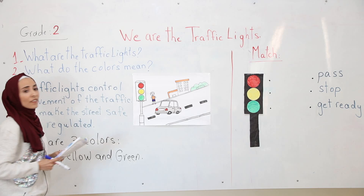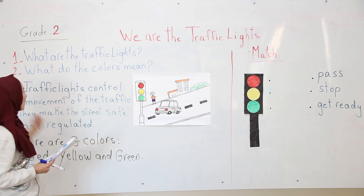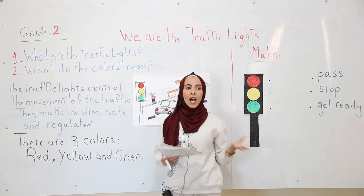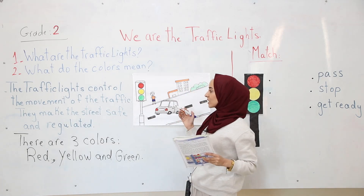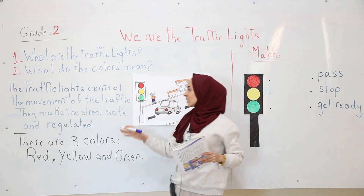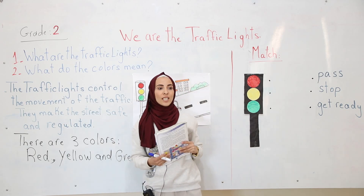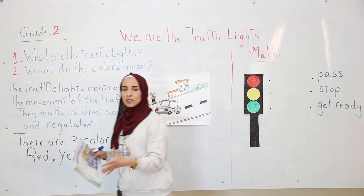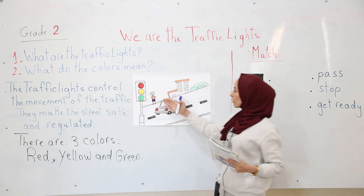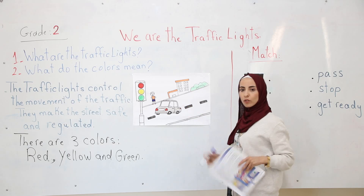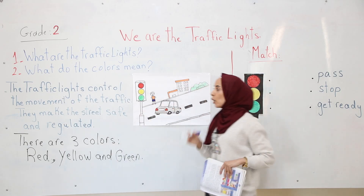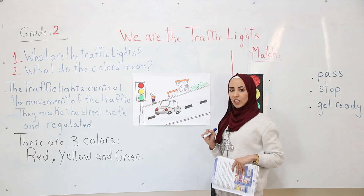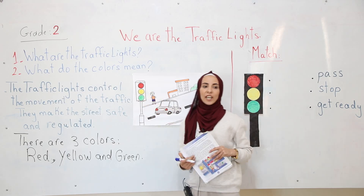First, what are the traffic lights? The traffic lights control the movement of traffic. The traffic lights make the street safe and regulated. For example, if we want to cross the street from one side to the other, we have to look at the traffic lights and follow the directions.